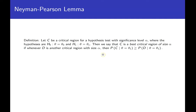We say that C is a best critical region of size alpha if, for some other critical region D, the probability of landing in C given that theta is theta one is greater than or equal to the probability of landing in D given that theta equals theta one.